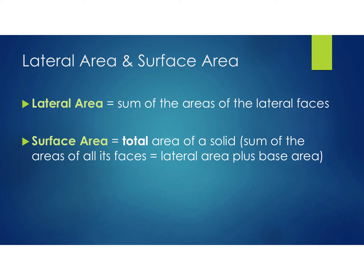Same definitions as before: the lateral area is just going to be the sum of the areas of the lateral faces — basically the sides of your prism or pyramid. The surface area or total area is the sum of all the faces. My abbreviation for lateral area is L-A, and for surface area I'll use S-A or T-A.